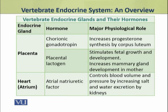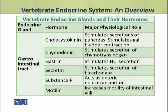Dear students, the placenta, which develops during fetal development, also produces many hormones. The two major hormones produced by the placenta are chorionic gonadotropin and placental lactogen. Dear students, the heart is a pumping organ, but its atrium also produces an important hormone called atrial natriuretic factor, which controls blood volume and pressure.